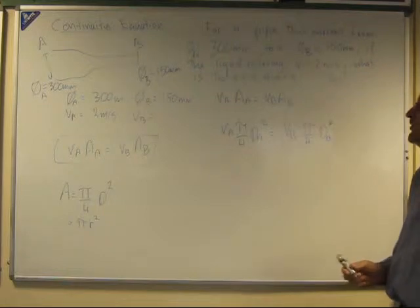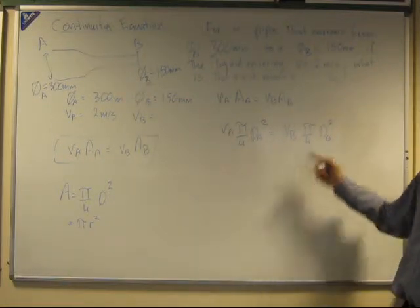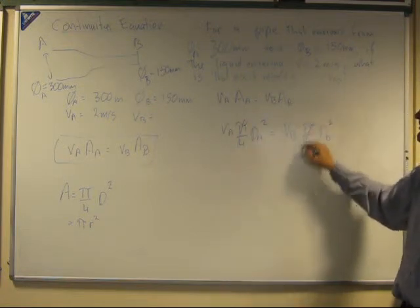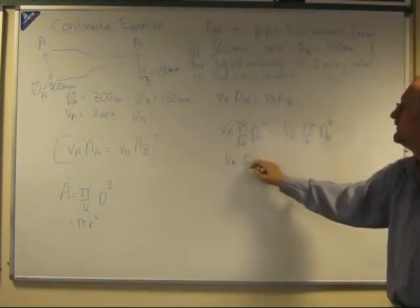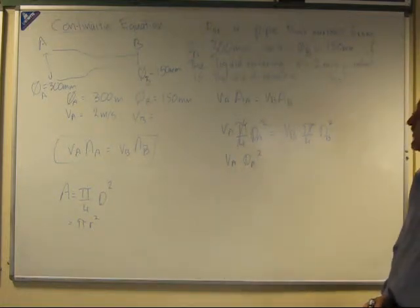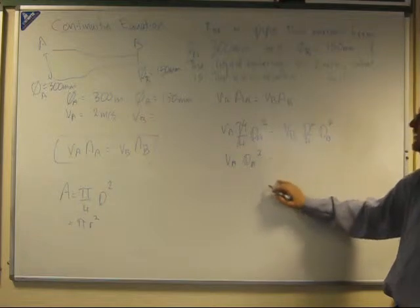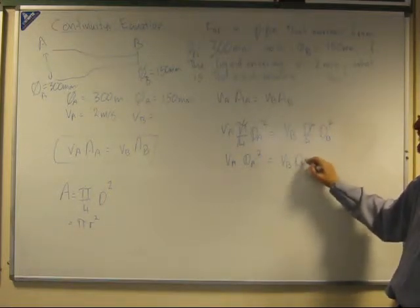Now comes the interesting part, because we've got a pi over 4 here, pi over 4 here, these cancel. You just get rid of those. Velocity at A times diameter A squared equals velocity at B times diameter B squared.